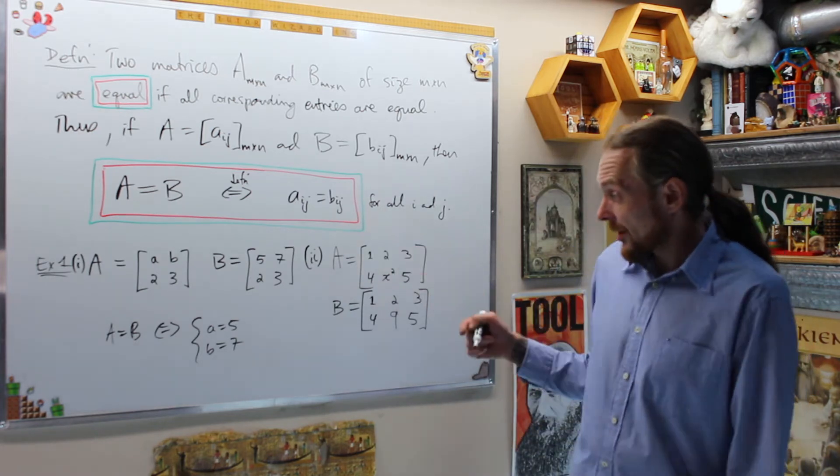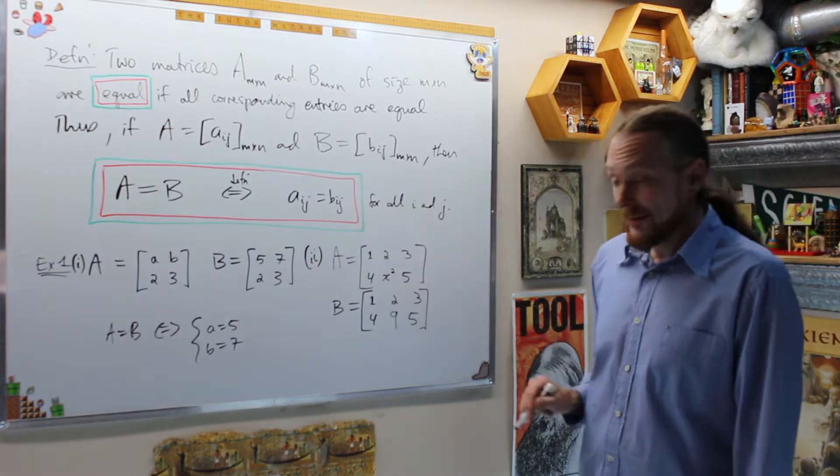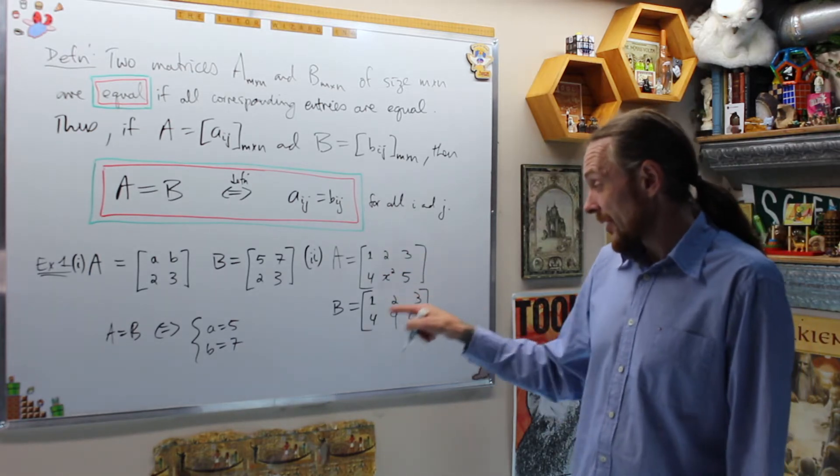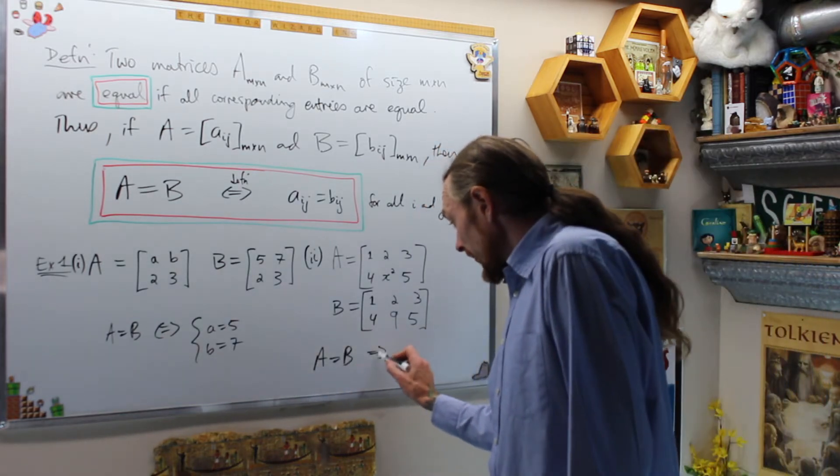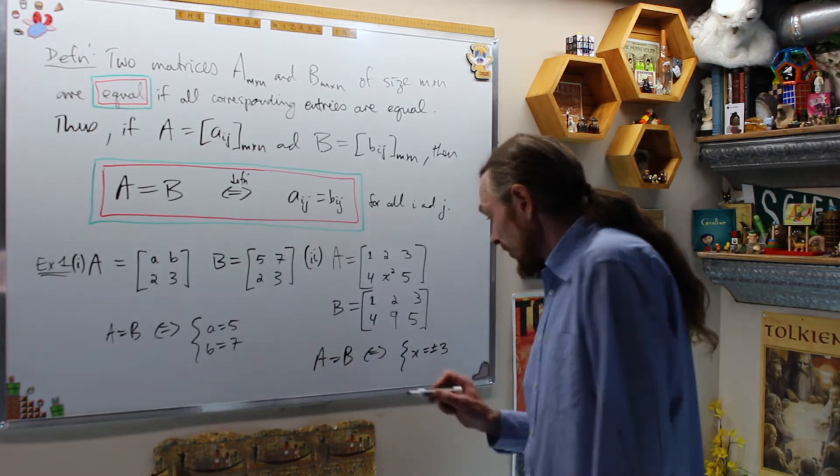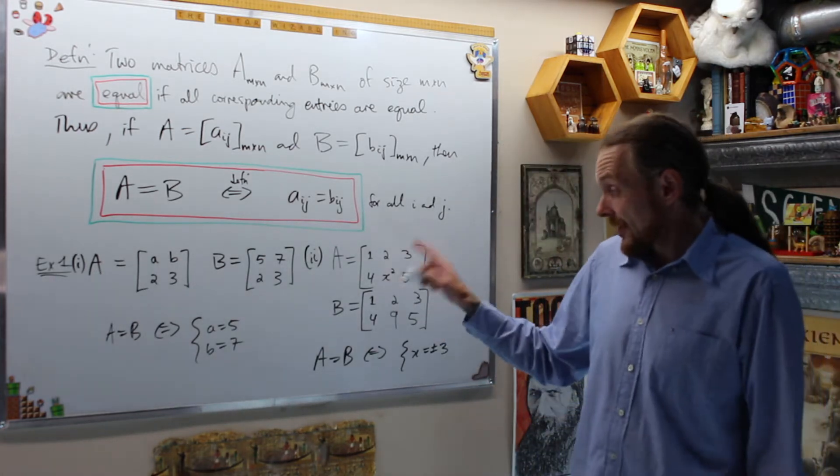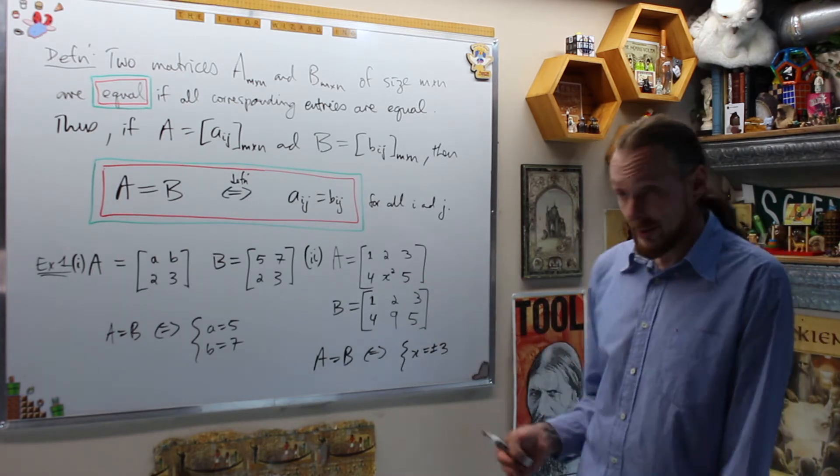Similarly for part 2, we have A is [1, 2, 3, 4, x squared, 5] and B is [1, 2, 3, 4, 9, 5] and this says that A will equal B if and only if x is plus or minus 3 because 3 times 3 is 9 and negative 3 times negative 3 is 9 before we get two values where they're equal.